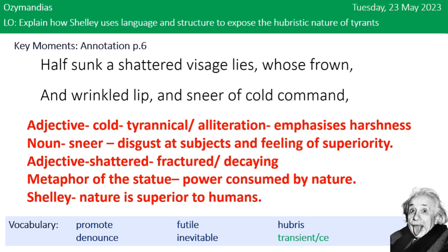The first quote: 'Half sunk a shattered visage lies, his frown and wrinkled lip and sneer of cold command.' The adjective 'cold' shows that he's tyrannical. The alliteration of 'cold command' emphasises his harshness because it is harsh-sounding alliteration. The noun 'sneer' shows the disgust Ozymandias had towards his subjects and the feeling of superiority he had. The adjective 'shattered' emphasises that his statue is fractured and decaying, and by proxy his power is decaying. The metaphor of the statue overall shows that his power has been consumed by nature, suggesting that nature is superior to humans.